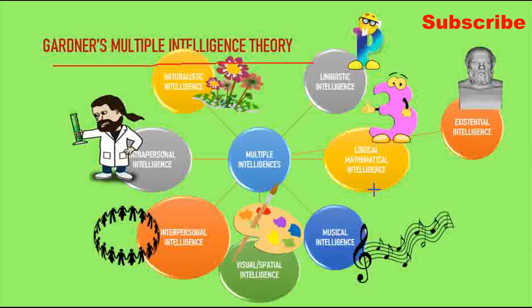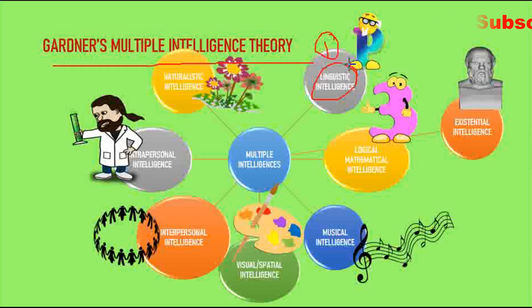Let's see what all the intelligences are. The first is linguistic intelligence — how you use language, either spoken or written. You can use any skill in learning language. Examples of people with high linguistic intelligence include William Shakespeare, William Wordsworth, and Chetan Bhagat.